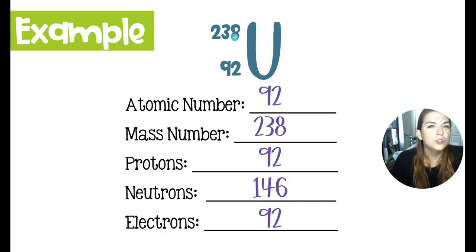At the tippy top, our mass number is 238, meaning there are 238 particles in the nucleus. They are either protons or neutrons. Knowing that there are 92 protons, we subtract that number from the total in the nucleus to get 146 neutrons.